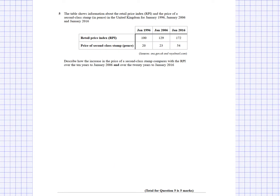The next question is for five marks. The table shows information about the Retail Price Index, or RPI, and the price of a second-class stamp in pence in the United Kingdom for January 1996, January 2006, and January 2016.